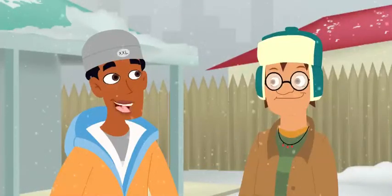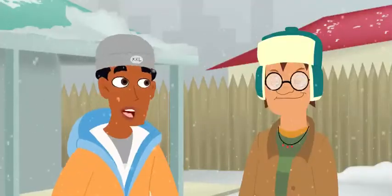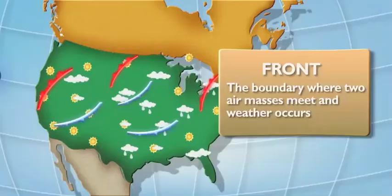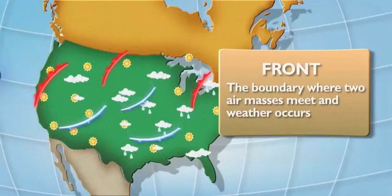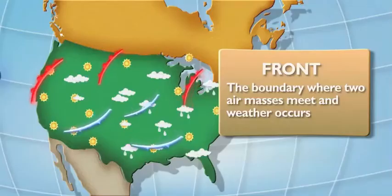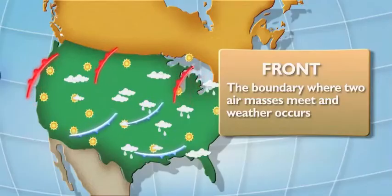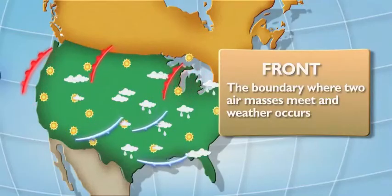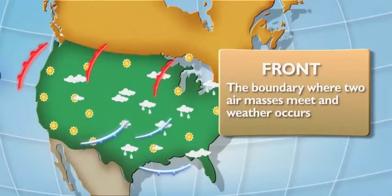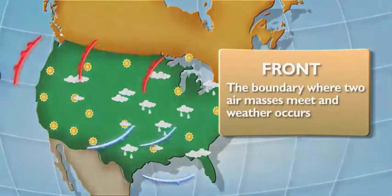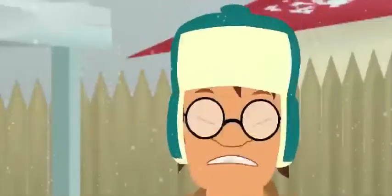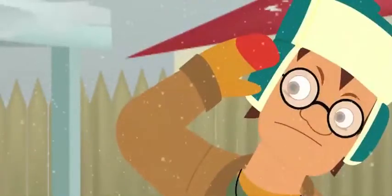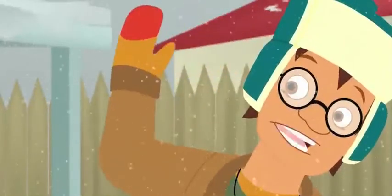The snow didn't just come from nowhere. A cold front moved in. A what? A cold front. A front is the boundary where two air masses clash, and weather, like snow, occurs. There are warm and cold fronts. I'll demonstrate. No, don't! Just tell me!